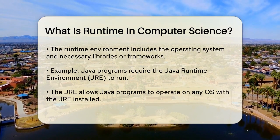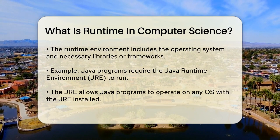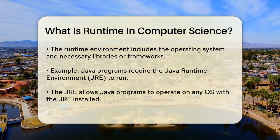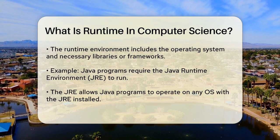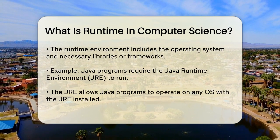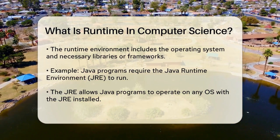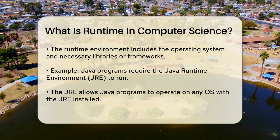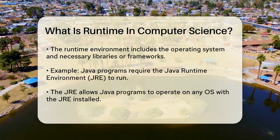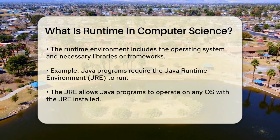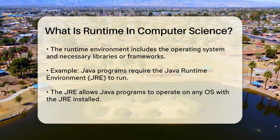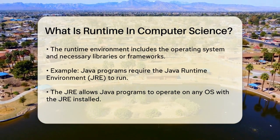For example, if you're running a Java program, you need the Java Runtime Environment, JRE, to execute it. This environment makes Java programs independent of the operating system, allowing them to run on any OS with the JRE installed.